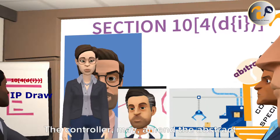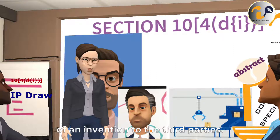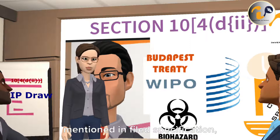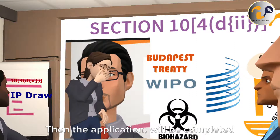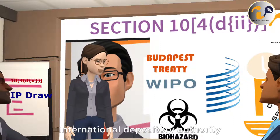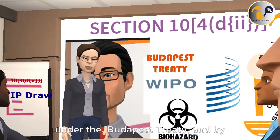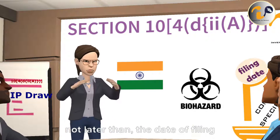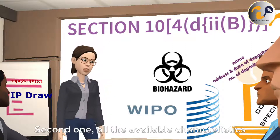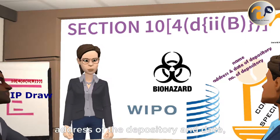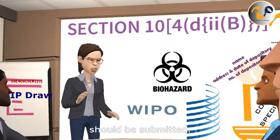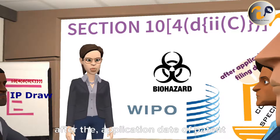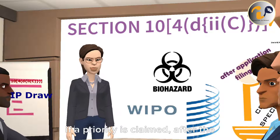The controller may amend the abstract for better understanding of the invention to third parties. If the applicant mentions a biological material in the specification which is not mentioned in the filed specification, then the application will be completed by depositing the material to an international depository authority under the Budapest Treaty and by fulfilling the following conditions. First, materials should be deposited not later than the date of filing the patent application in India. Second, all the available characteristics of the material including name, address of the depository and date and number of the deposit should be submitted.